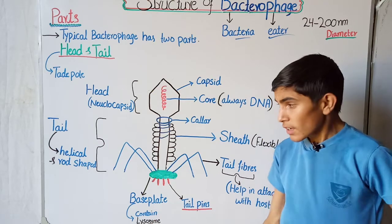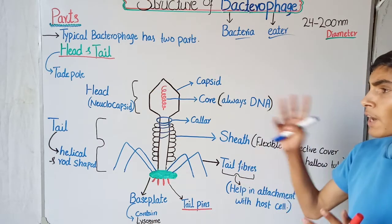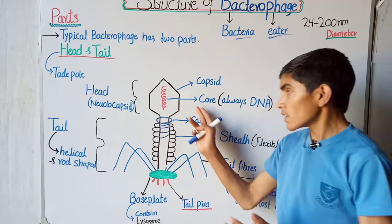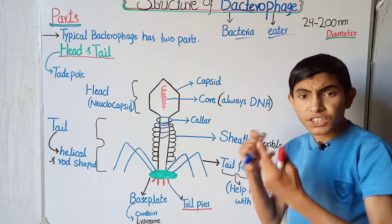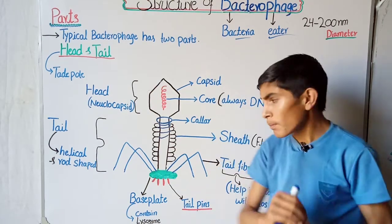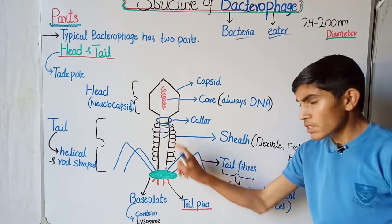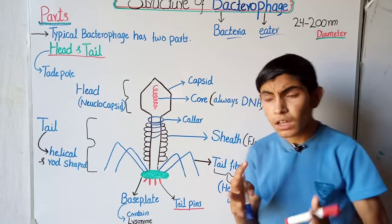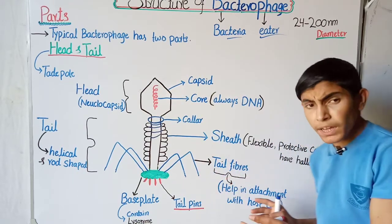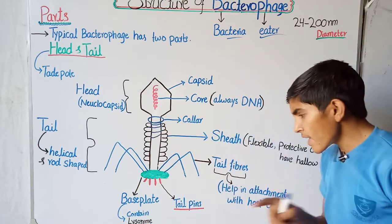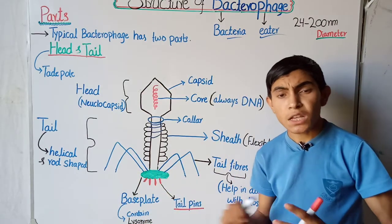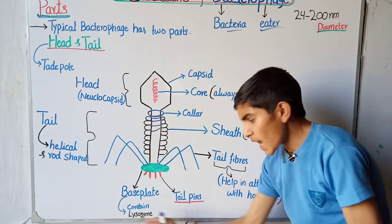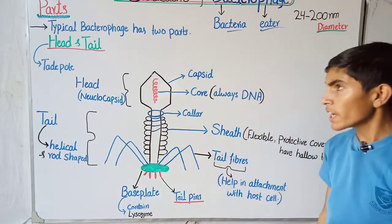Through these tail pins, the lysozyme enzyme is injected into the host cell from the base plate. To summarize: the bacteriophage contains two parts — the head and the tail. The head contains the capsid and the core, and the core always contains DNA. The collar connects the head with the tail. The tail consists of a sheath containing a hollow tube inside, and the sheaths are flexible, helping in contraction and relaxation. The tail fibers help in attachment with the host cell, the base plate contains the enzyme lysozyme, and the tail pins act as injectors to inject lysozyme into the host cell.